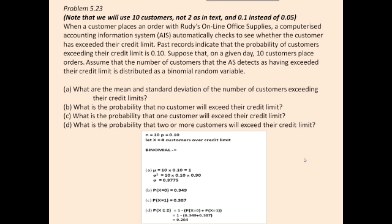Let's have a look at the four parts that we need to go through. What are the mean and standard deviation of the number of customers exceeding their credit limit? When it's binomial, to work out mean and standard deviation, we do have our shortcut formula. As long as you know N and as long as you know P, the mean will always be N times P. So 10 times 0.1 gives me a mean of 1, which tells me, on average, 1 out of the 10 customers would exceed their credit limit.